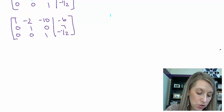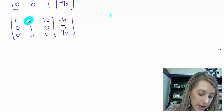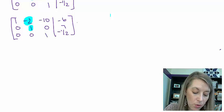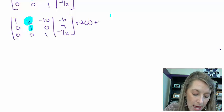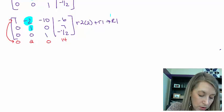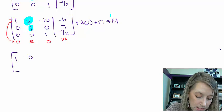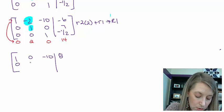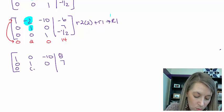Let's make the -2 in row 1 into a 0 by comparing with row 2. I take row 2 times 2 and add it to row 1. Scratch work: 0, 2, 0, 14. Adding to row 1: 1, 0, -10, and 14 minus 6 gives 8. Row 2 and row 3 stay the same since I have those answers.